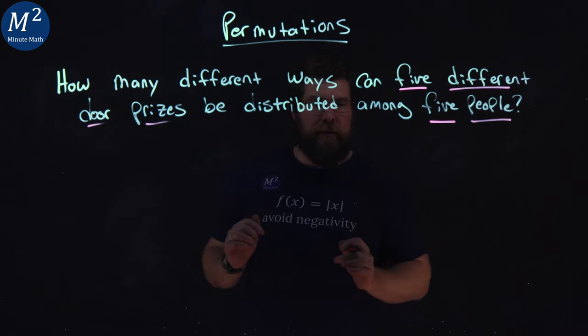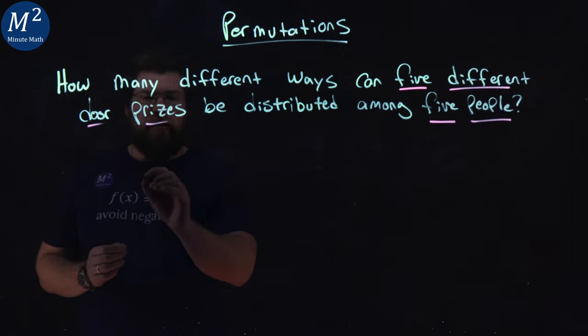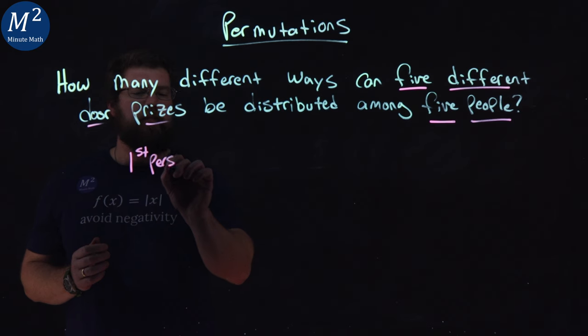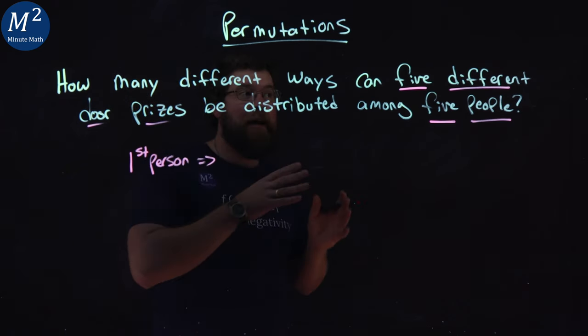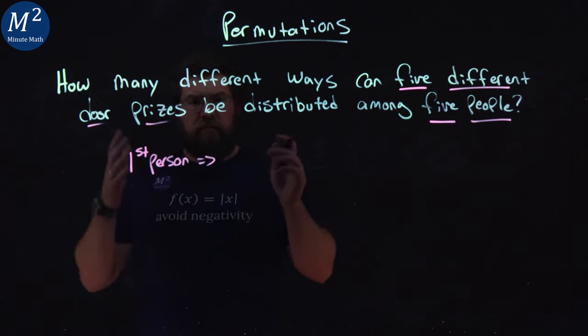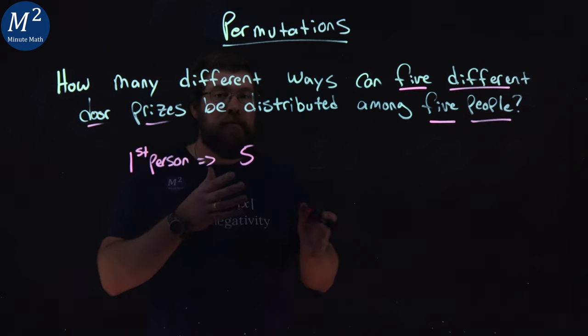That's key for this problem here. Our first person, they can choose one of five different door prizes. So there's five options for the first person.